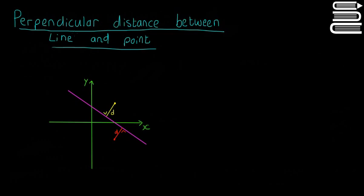So now we're going to have another look at the perpendicular distance between a line and a point. We're going to look a little bit deeper at the formula, so there are more things you can do than simply just getting the distance between a line and a point. It can also give you information about the point and the line.